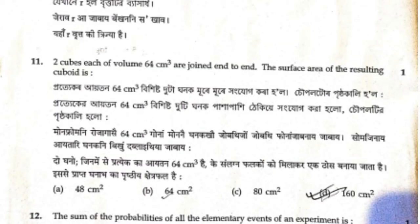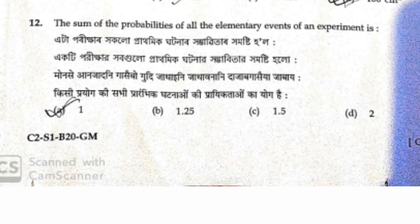The next question: if you have 64 cm and 20 cm, the slant height is 20 cm. Options: A is 48 cm, B is 64 cm, C is 80 cm, D is 160 cm. The right answer is D: 160 cm. For the following question, options are A=1, B=1, C=1.25, D=1.5, and another D=2. The right answer is A option: 1.